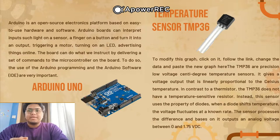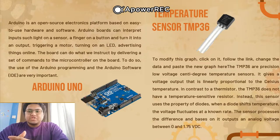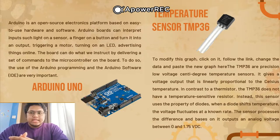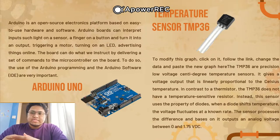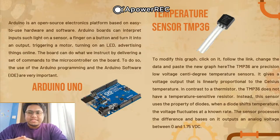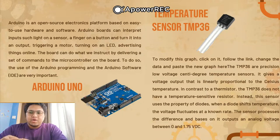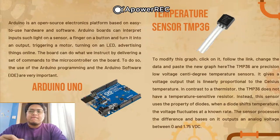The second component is the temperature sensor TMP36 model. The TMP36 is a precision low-voltage temperature sensor that gives a voltage output linearly proportional to the Celsius temperature. In contrast to a thermistor, the TMP36 does not use a temperature-sensitive resistor. Instead, it uses the property of diodes — when a diode shifts temperature, the voltage fluctuates. The sensor processes the difference and outputs an analog voltage between 0 to 1.75 VDC.